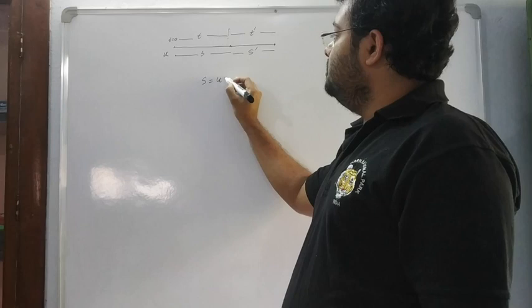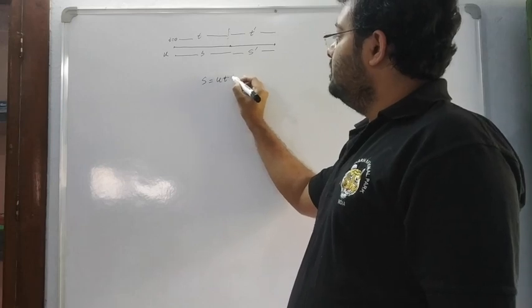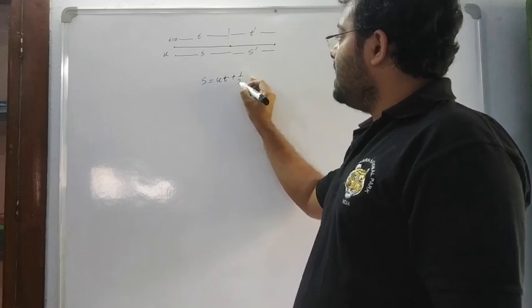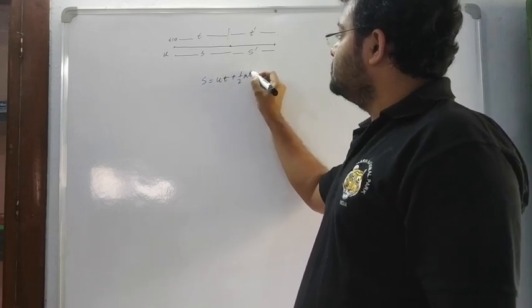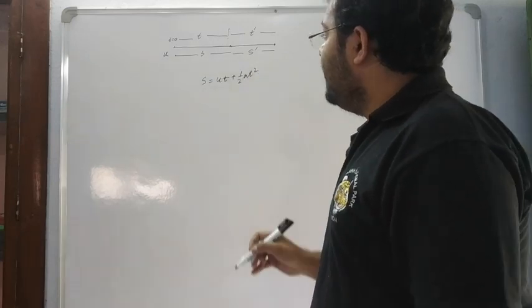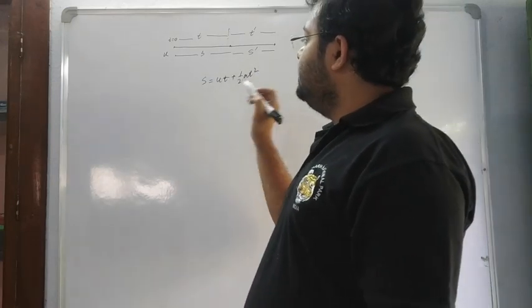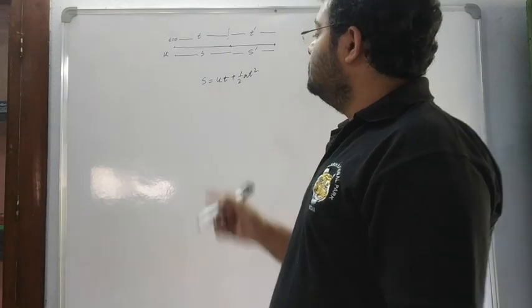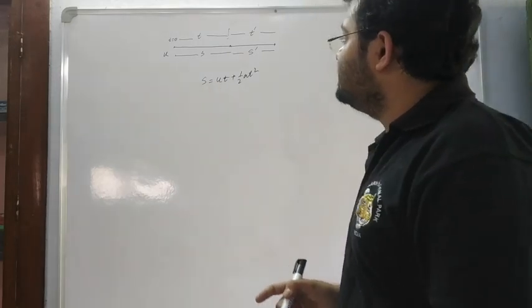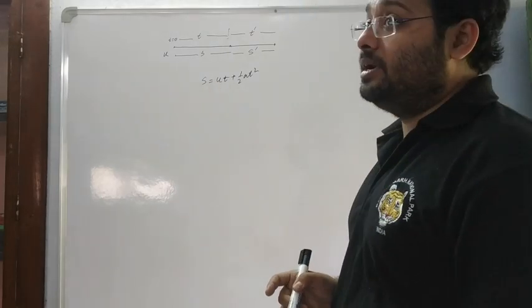The actual equation will be: x is equal to u t' plus a half t' squared.